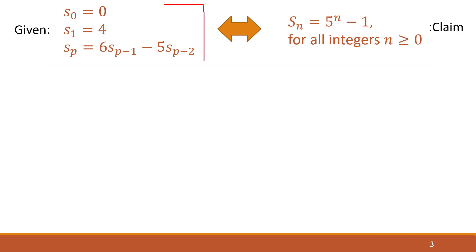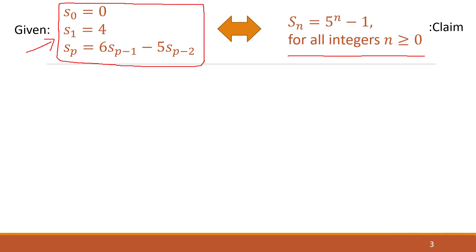It's important to note that the recurrence relation is given to us — that's not questionable. The claim that s(n) = 5^n − 1 is what we need to prove. We'd like to prove that the two are equivalent, but there's no question about the recurrence relation being correct since it is given. The question is all about whether this is the correct closed form formula.